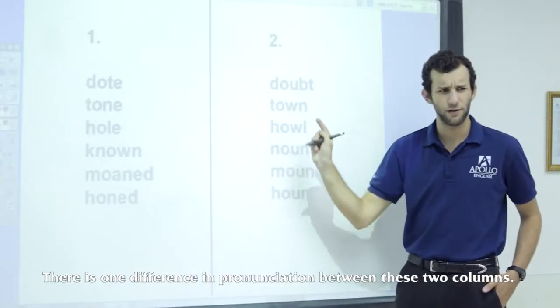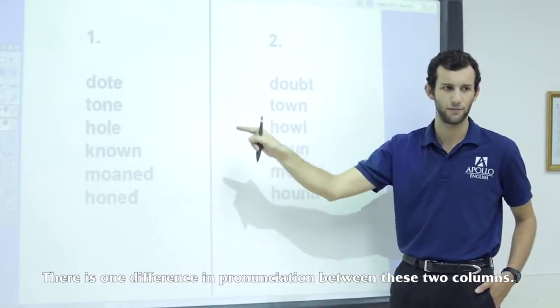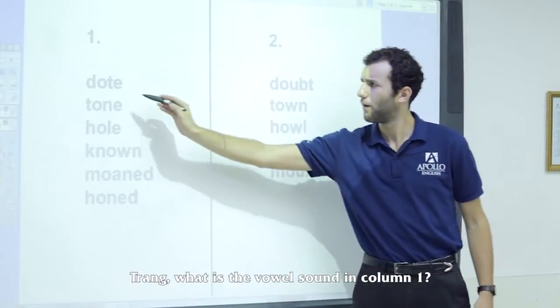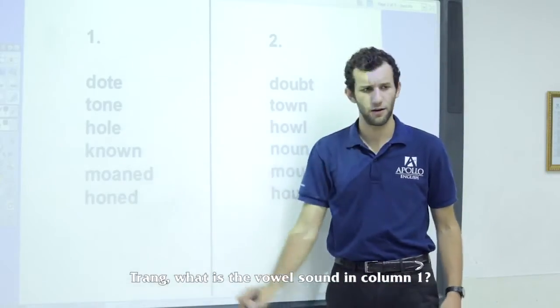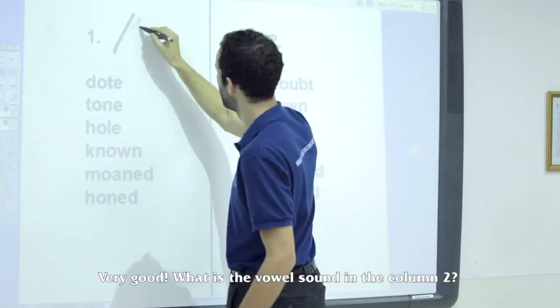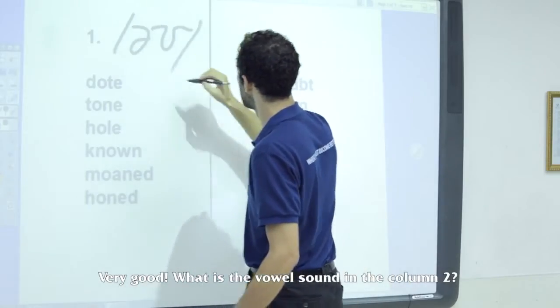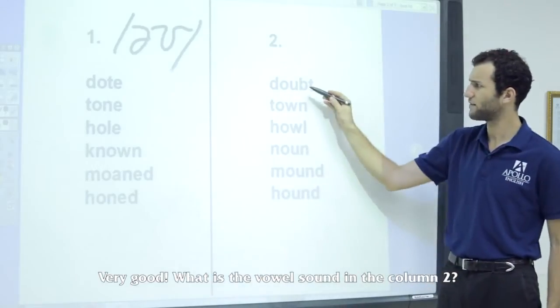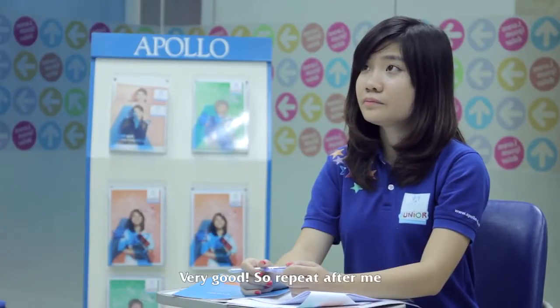There's one difference in pronunciation between these two columns. John, what is the vowel sound in column one? O. Very good. O. And what is the vowel sound in column two? O. Very good. O.